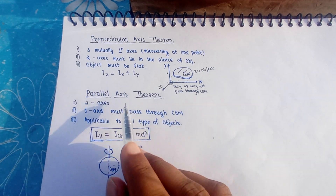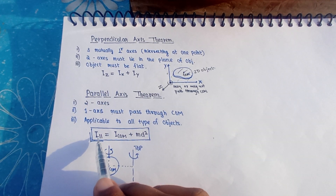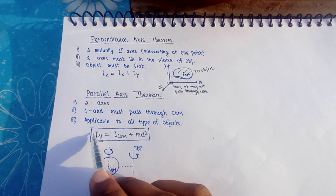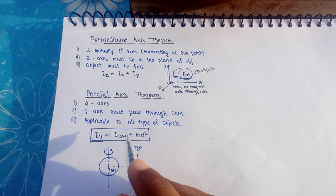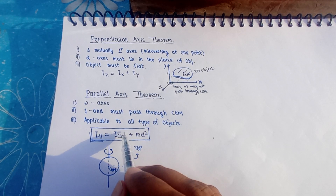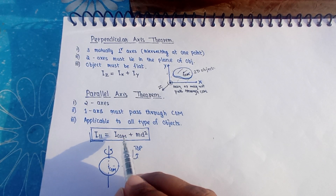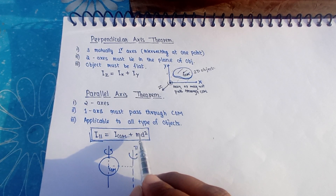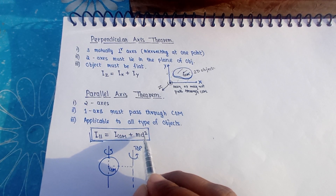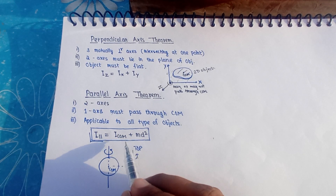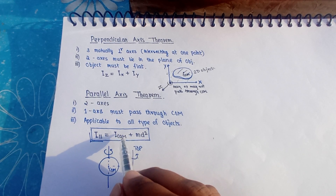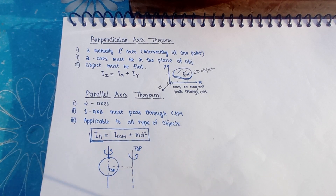This is the result of the parallel axis theorem. The moment of inertia about any axis equals the moment of inertia about the center of mass plus M times d squared — so the moment of inertia is increasing. It is providing more resistance.